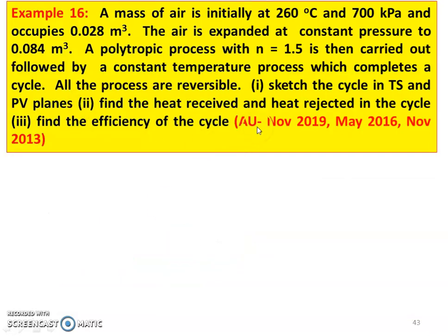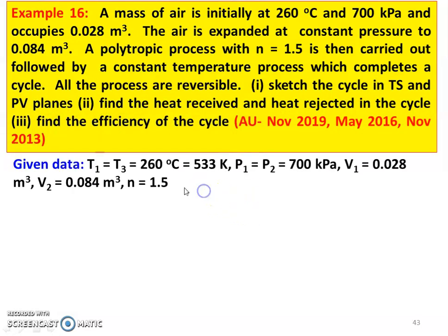Example number 16. It appeared in 3 question papers: November 2019, May 2016, and November 2013. A mass of air initially at 260°C and 700 kPa occupies 0.028 m³. The air is expanded at constant pressure to a volume of 0.084 m³. A polytropic process with N = 1.5 is then carried out, followed by a constant temperature process which completes the cycle. All processes are reversible. Sketch the cycle in the TS and PV plane, find heat received, heat rejected, and efficiency of the cycle.